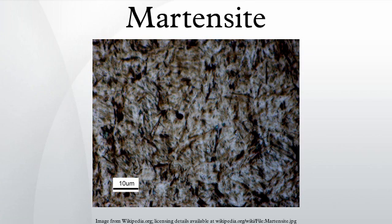For a eutectoid carbon steel of thin section, if the quench starting at 750°C and ending at 450°C takes place in 0.7 seconds, no pearlite will form and the steel will be martensitic with small amounts of retained austenite.